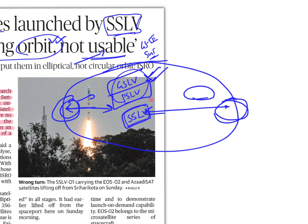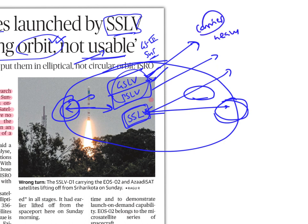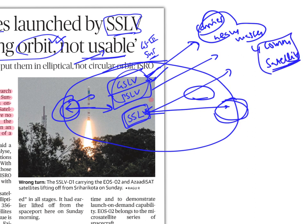Let's differentiate these launch vehicles by their applications. GSLV carries heavier loads — for example, communication satellites, which are quite heavy. GSLVs are higher powered and can carry these satellites to very far away places, even up to 36,000 kilometers from Earth's surface. Communication satellites are an example of what GSLV carries.